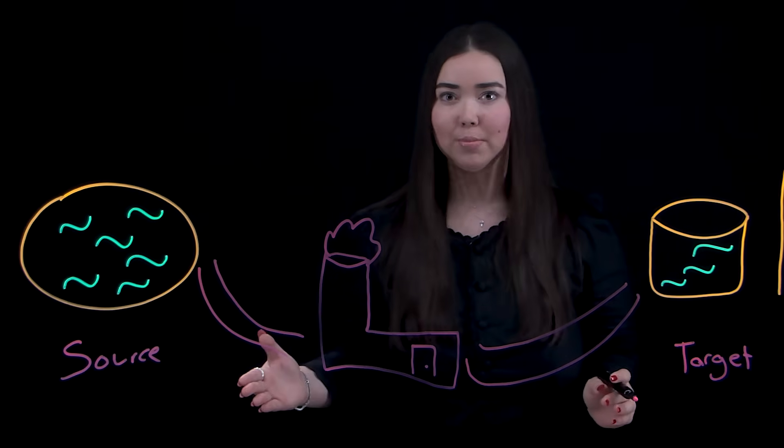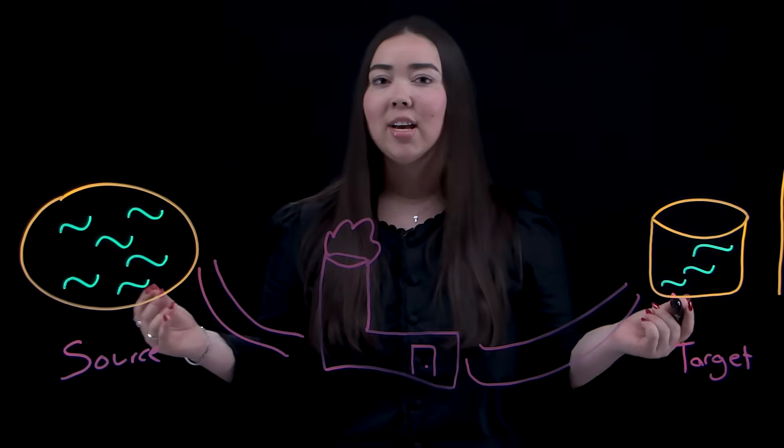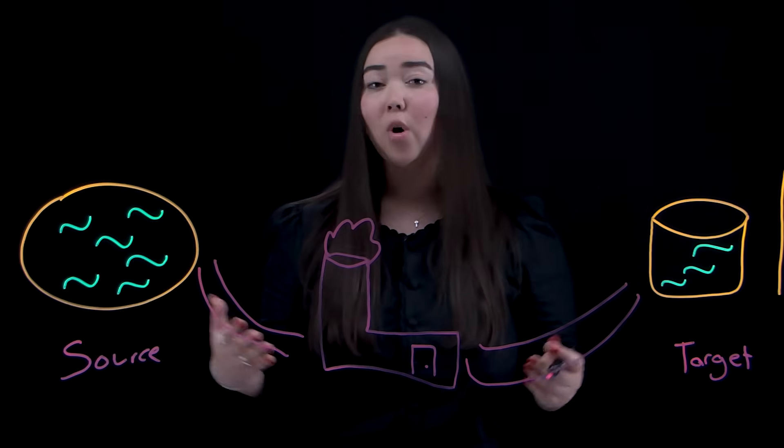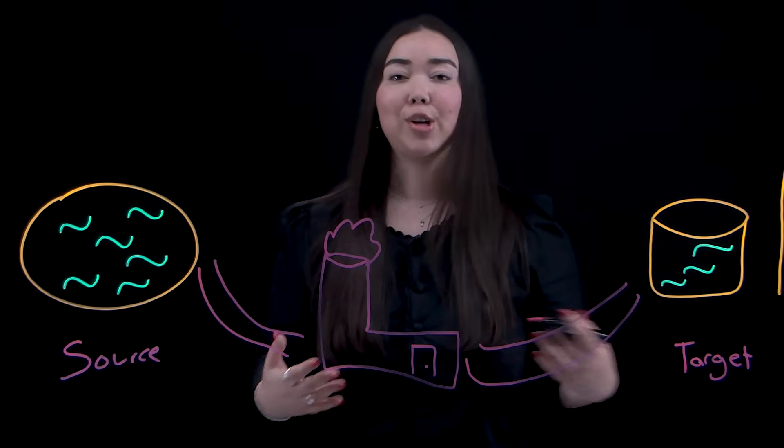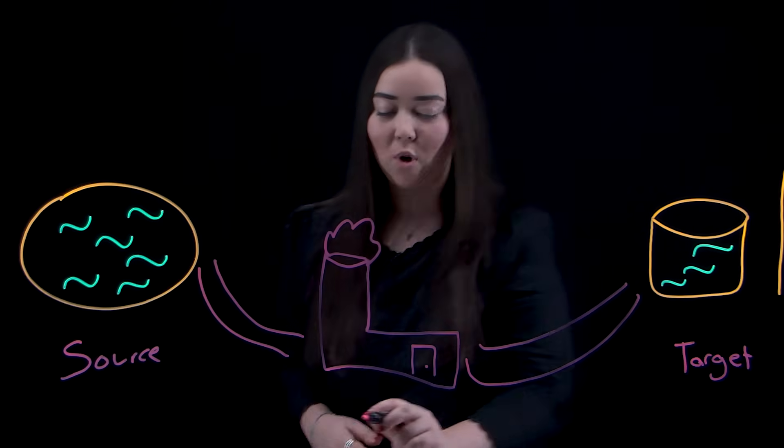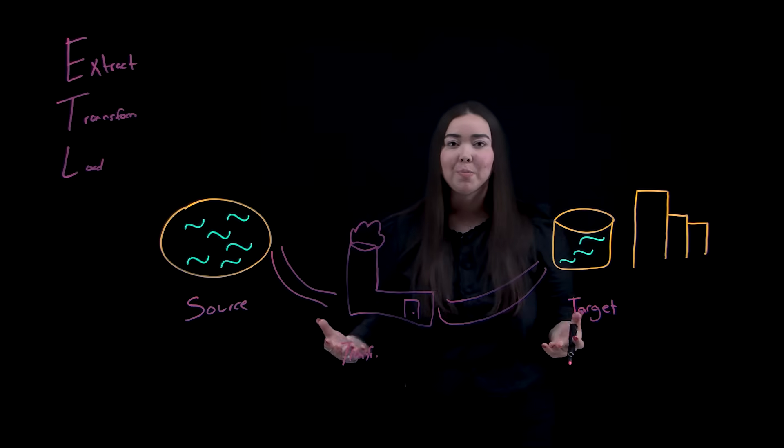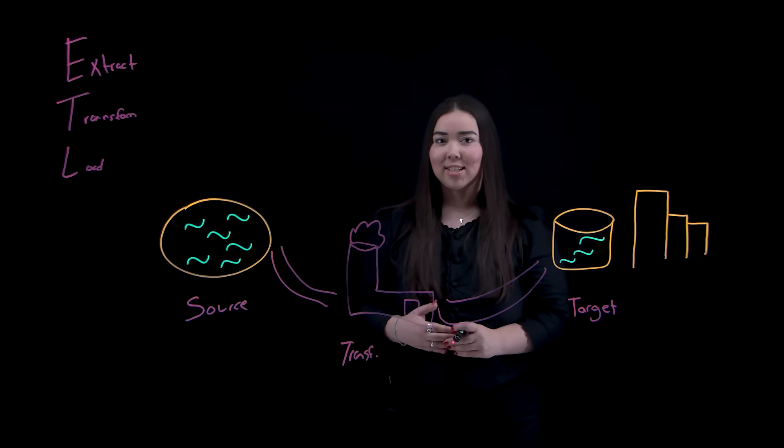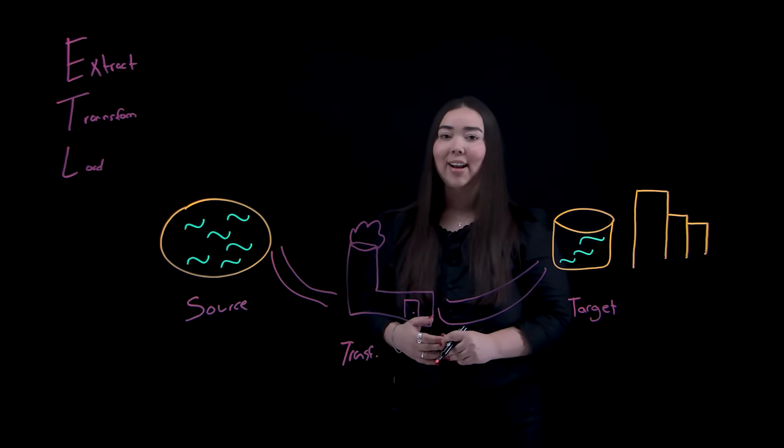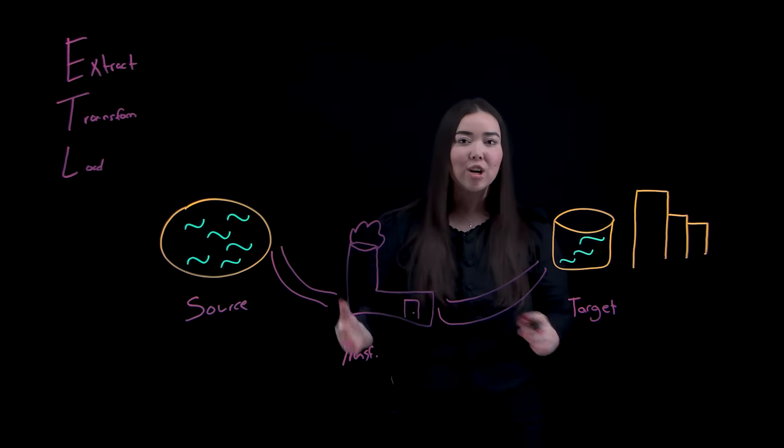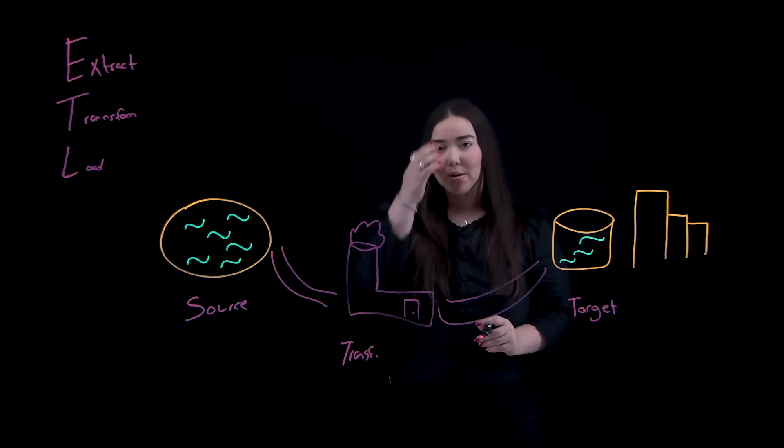In data terms, we extract raw data from operational source systems like a database management system, data warehouse, data lake, or even an application. We then transform it through cleansing, joining, and enrichment using a data processing engine such as third-party or open-source. Finally, we load the clean, structured output into a target system like a cloud data warehouse or data lakehouse.